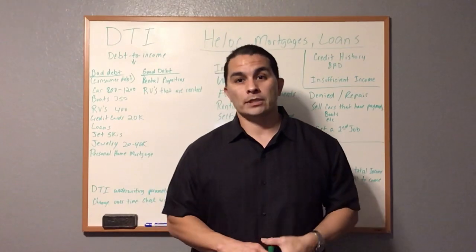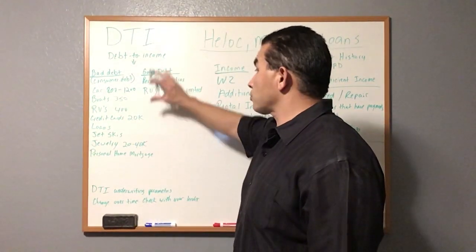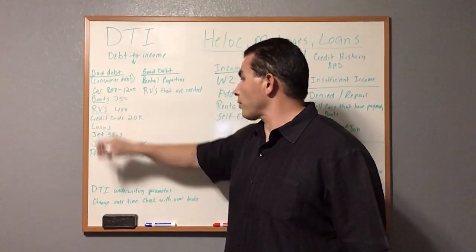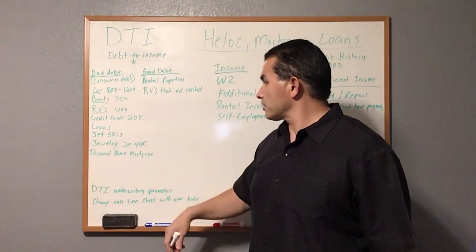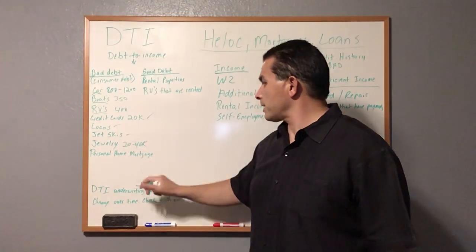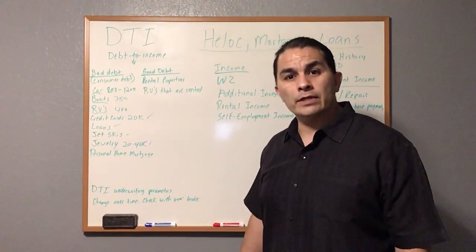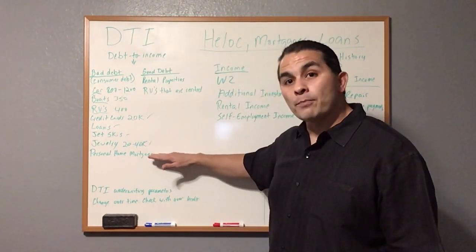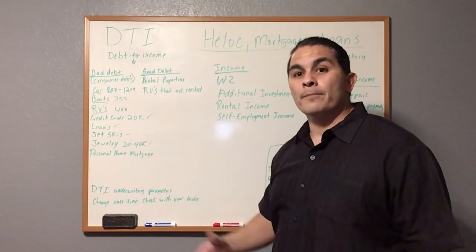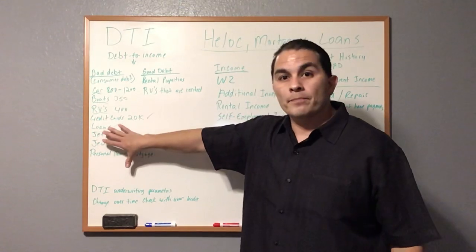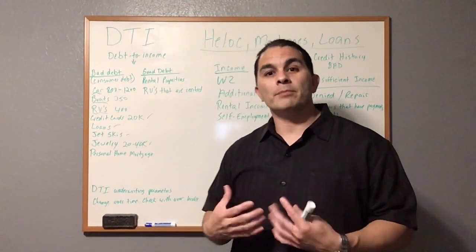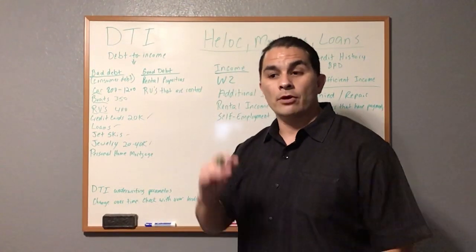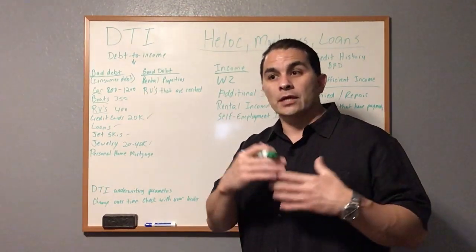You can get rid of your cars, boats, RVs, credit cards, other loans, jet skis, and jewelry — sell it, get rid of it. Your personal mortgage you'll just have to pay down, or if it's valued enough, you can pull a HELOC out of it and use that to buy a rental property. Once you have additional properties bringing in income, you can purchase other assets. I have other videos on HELOCs and different ways to purchase additional properties.